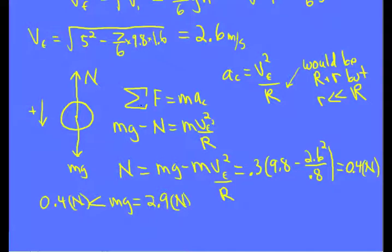And so sum of the force is equal to ma. I have weight is positive, normal force negative because acceleration is down, so I made down positive. That equals mv final squared over r. And solving for the normal force, I get 0.4 newtons. And so 0.4 newtons is much less than the weight of the object. It's actually a little bit faster and it would lose contact with the surface of the ramp.